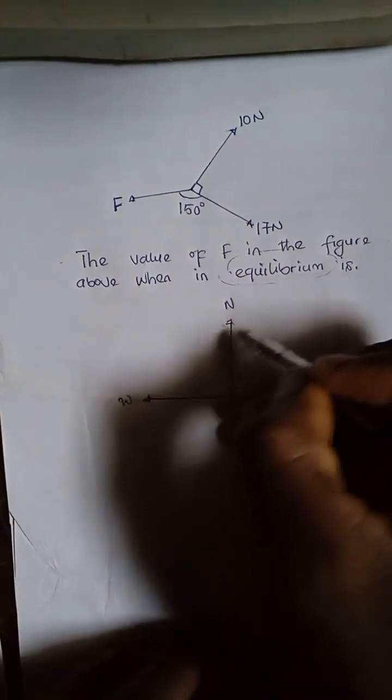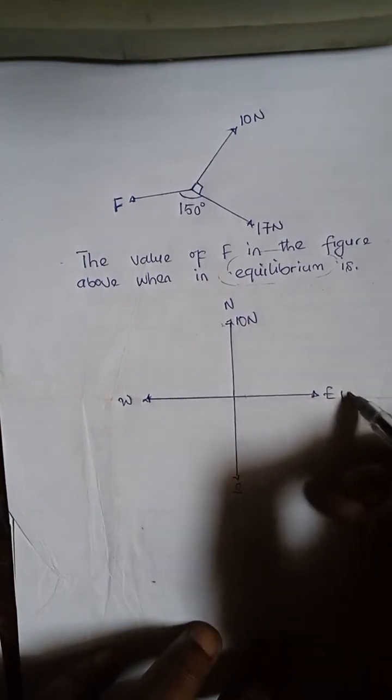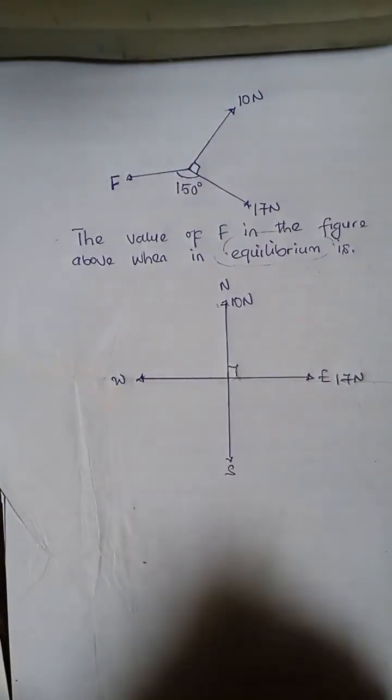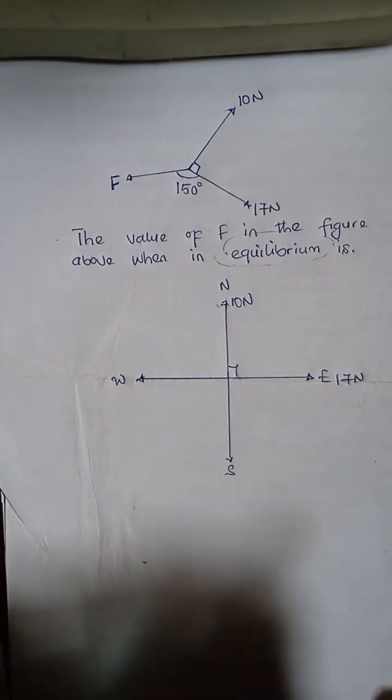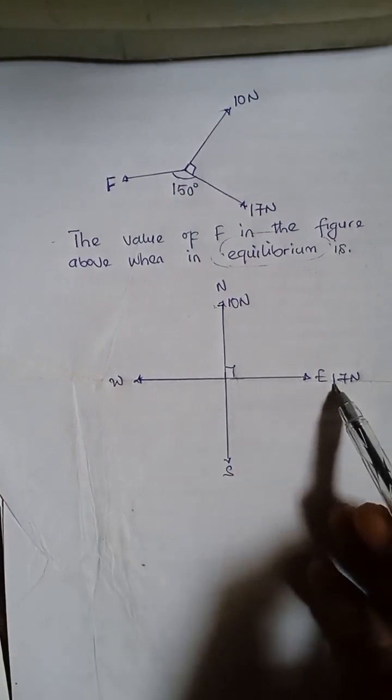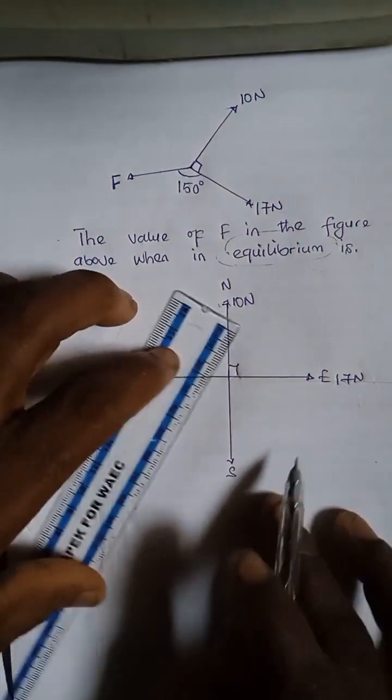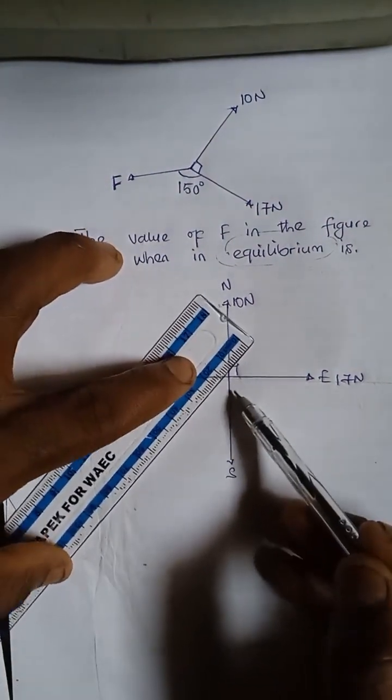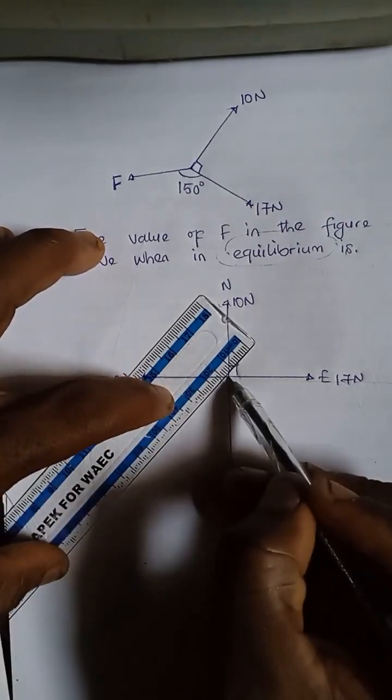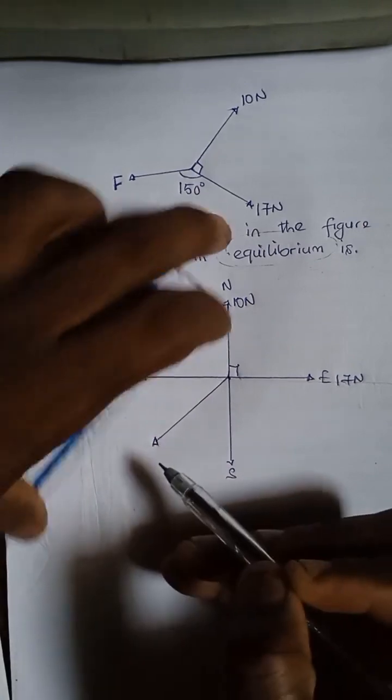So this is where my 10 newton force is. Then this is where I'm going to put my 17 newton force. The angle between them as before is 90 degrees. So if we look at it, my 150 degrees, where am I going to put it? It's the angle between the 17 newton force and F. Remember, F is what we are looking for, the third force. So I'm going to put it somewhere here. If from here to here is 90, 90 plus an extra 60 gives us 150. So I'm going to put it somewhere here.